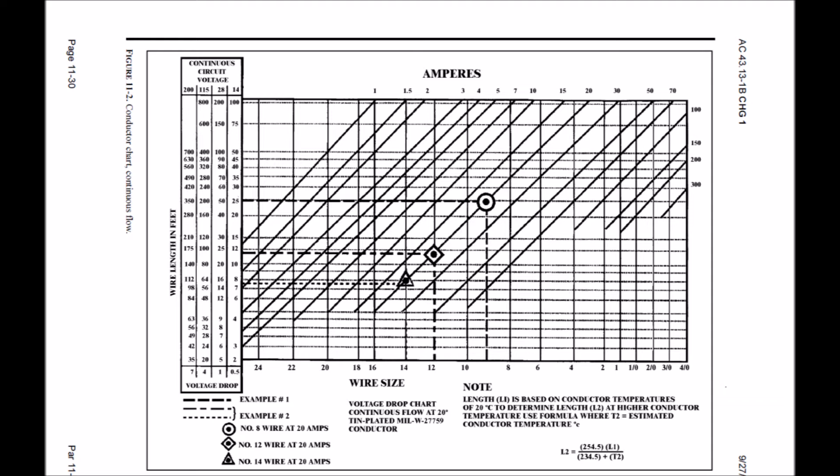You'll see at the top of the chart, amperes, and the numbers along that top line correspond to the total amps of the circuit you're using. Down the left-hand side, there are several columns of continuous circuit voltage. Let's assume we're going to use the 14-volt column for this example. If you follow the 14-volt column down, you'll see wire length in feet down the left-hand side.